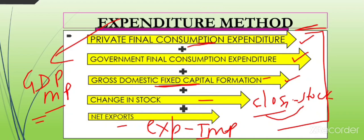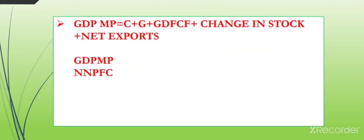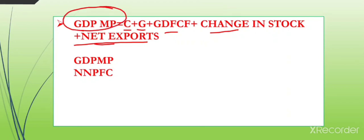So when using the expenditure method, the formula for GDPMP is: Private Final Consumption Expenditure plus Government Final Consumption Expenditure plus Gross Domestic Fixed Capital Formation plus Change in Stock (which equals closing stock minus opening stock) plus Net Export (which equals exports minus imports). When we add all these things together, we get GDPMP — that is the first step.